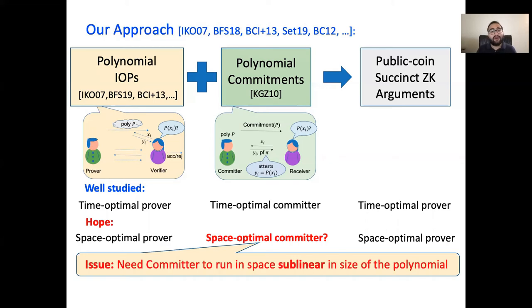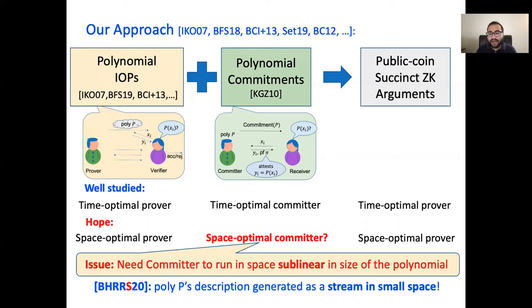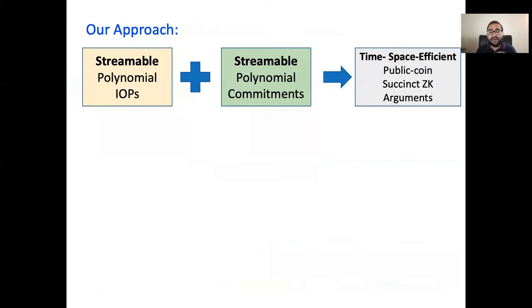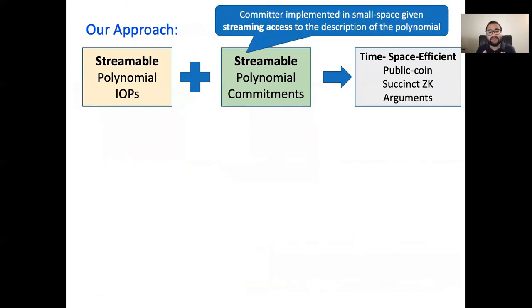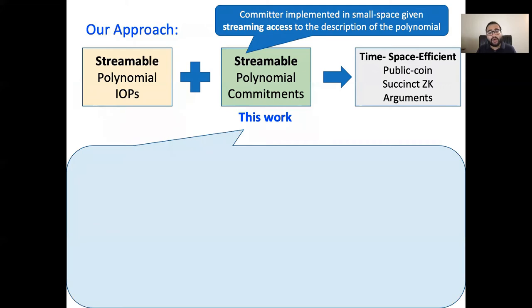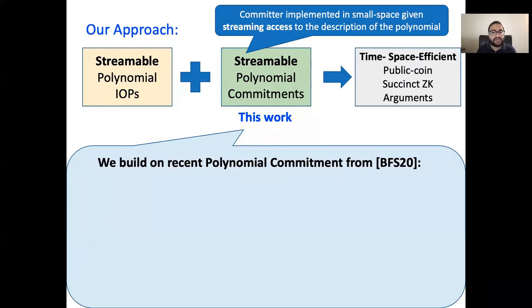But in a prior work with the same set of co-authors, we observe that the polynomial in context has a rather space-friendly structure. Specifically, this polynomial encodes the transcript of the underlying RAM program and hence its description can be generated as a stream in small space. We refer to polynomial commitments where the committer requires small space when given streaming access to this polynomial as a streamable polynomial commitment, which is what we construct in this work.